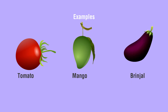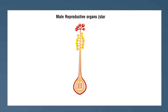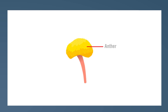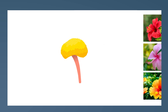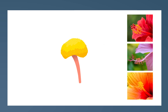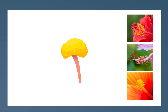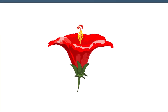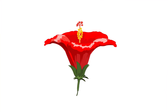Male Reproductive Organs — Stamen: The male part of the flower is the stamen and is responsible for producing pollen. Anthers are two tube-shaped objects that release the pollen and are mostly found yellow in colour. The anther sits on a long thin tube called a filament. Together, these organs make up the male part of the flower known as the stamen.